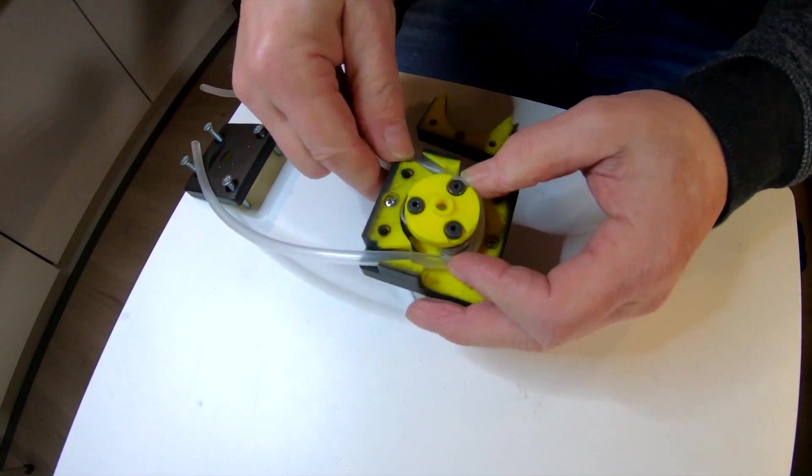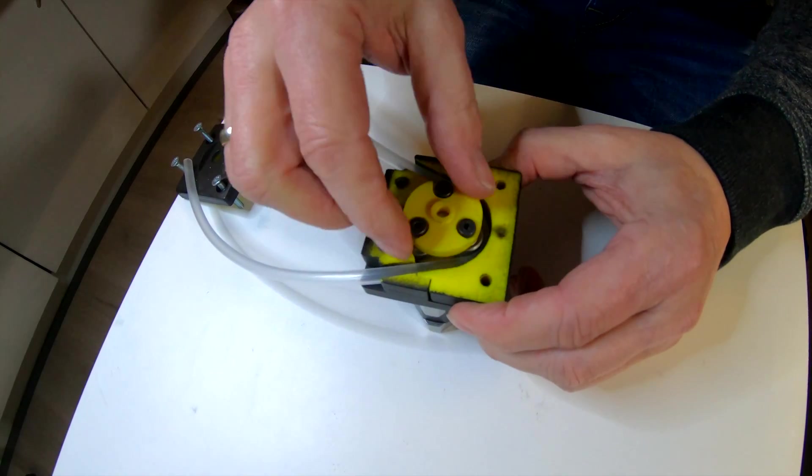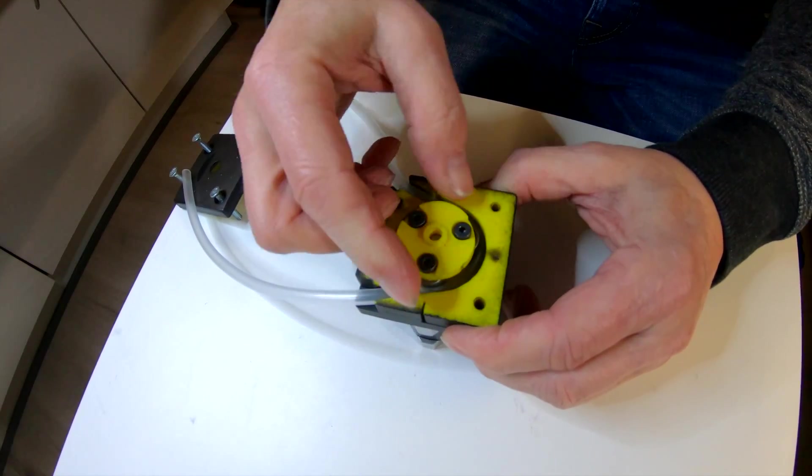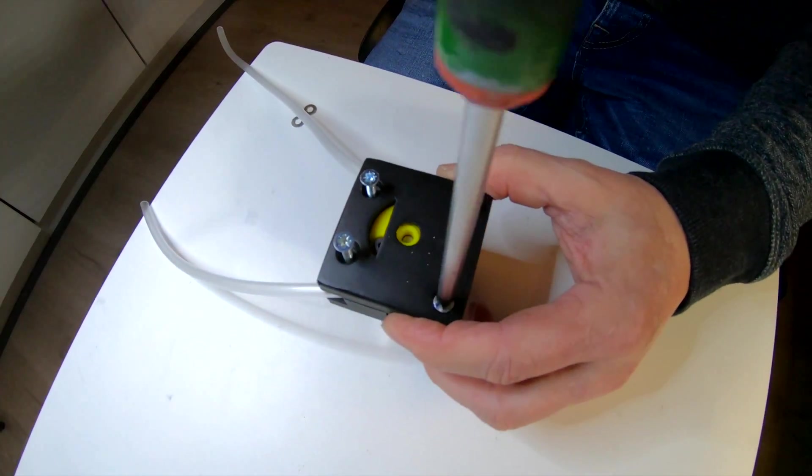Then you can put the tubing inside the pump. The pump works like shown here where it pushes the liquid through the tube. Now you can screw the upper part in and it's done.